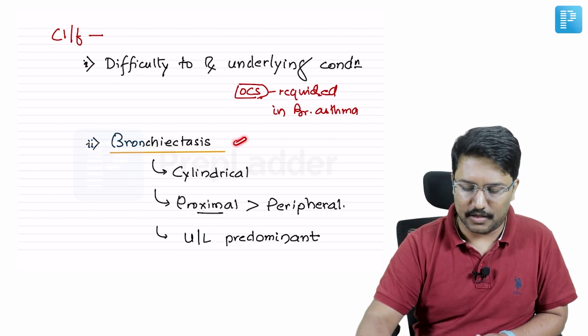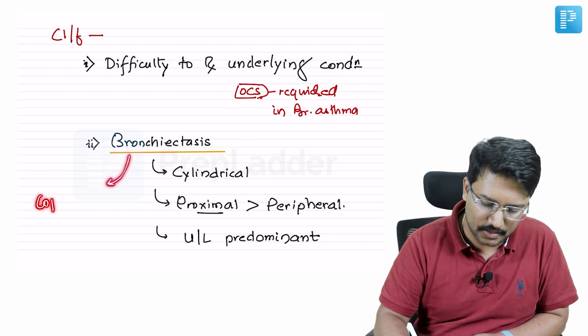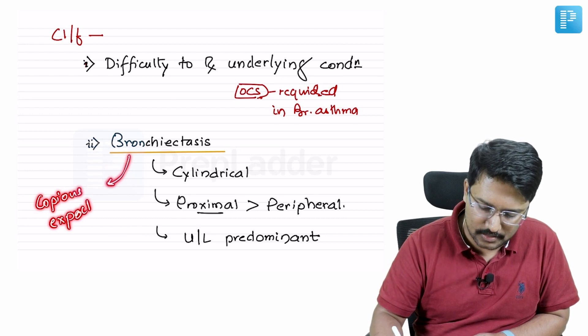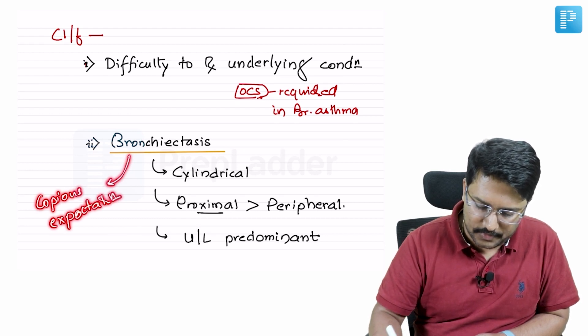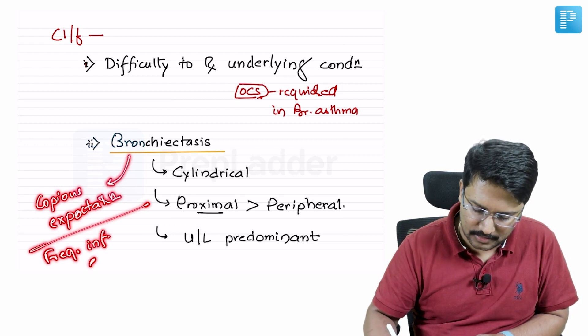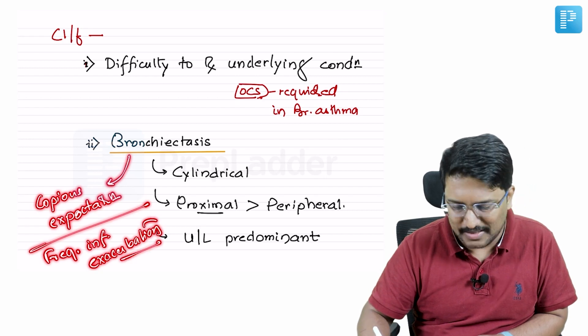You might have the radiological evidence of bronchiectasis, and the presence of bronchiectasis may also be associated with copious expectoration and frequent infectious exacerbations.